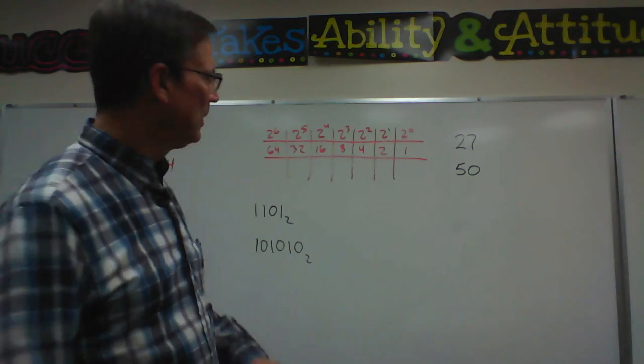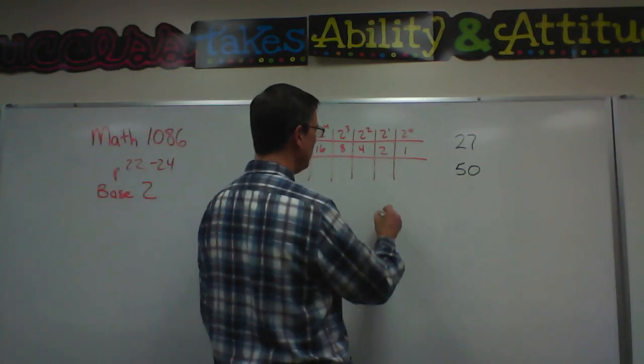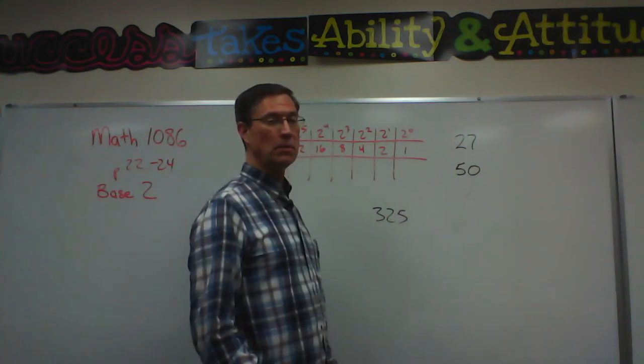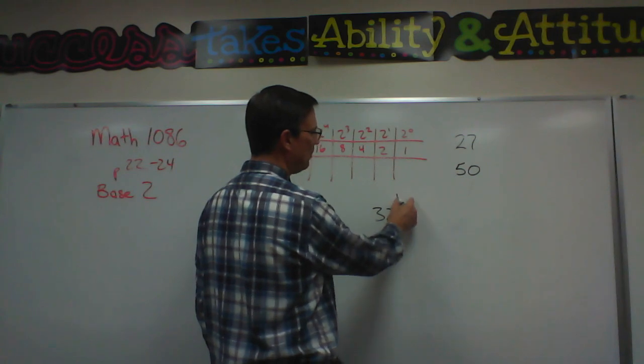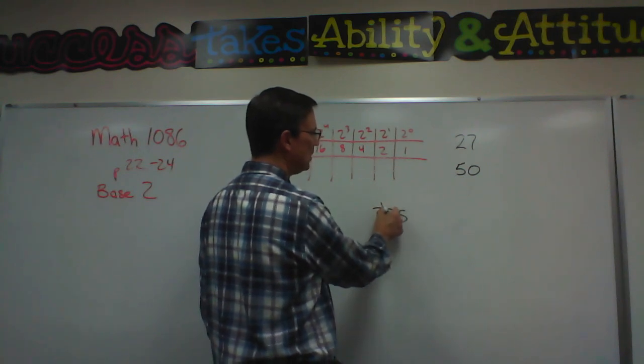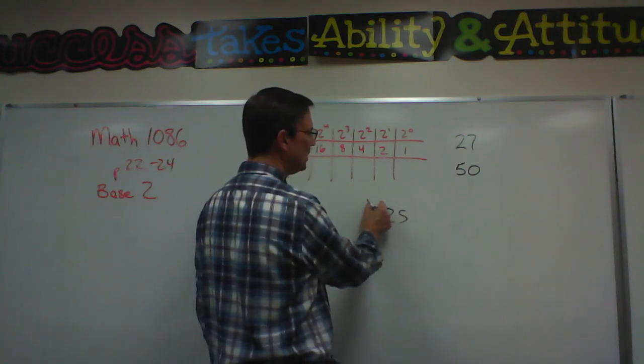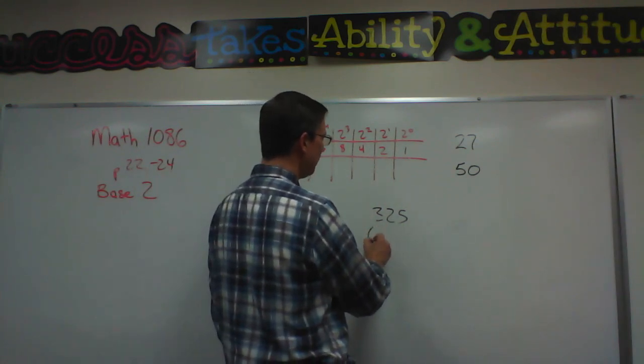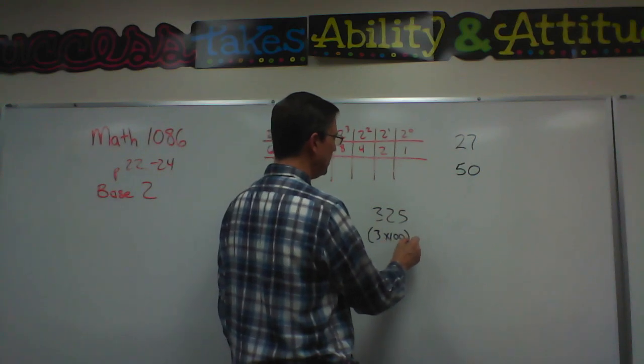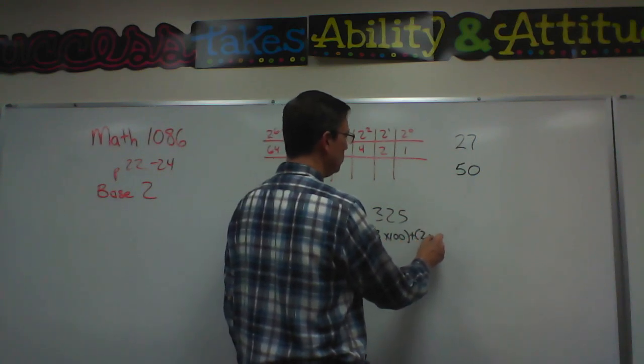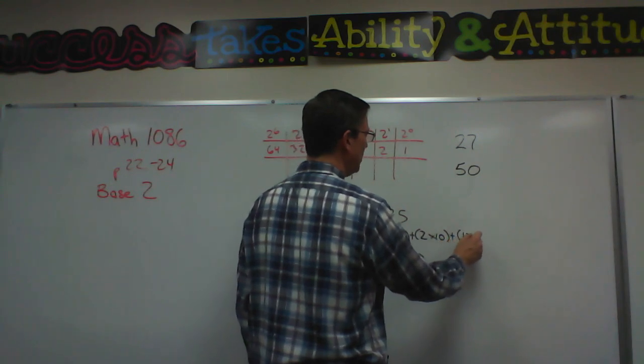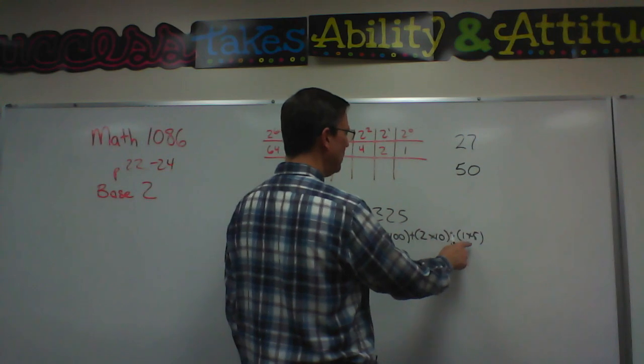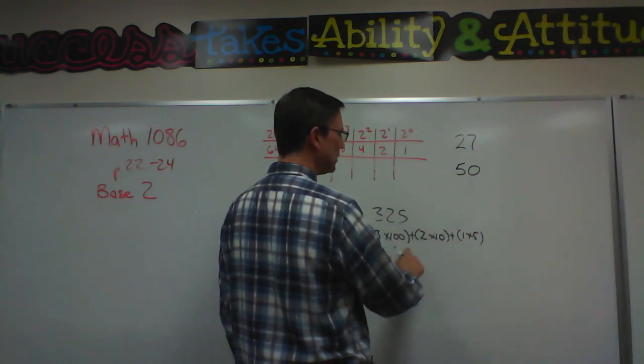When we take a number, let me illustrate this first with a number like 325, we use a decimal system where this column represents ones, this is actually tens, and then the third place value is hundreds. So in expanded form, we would say this is 3 times a hundred plus 2 times 10 plus 5 times 1. But anyways, you get what I'm saying, this is expanded.